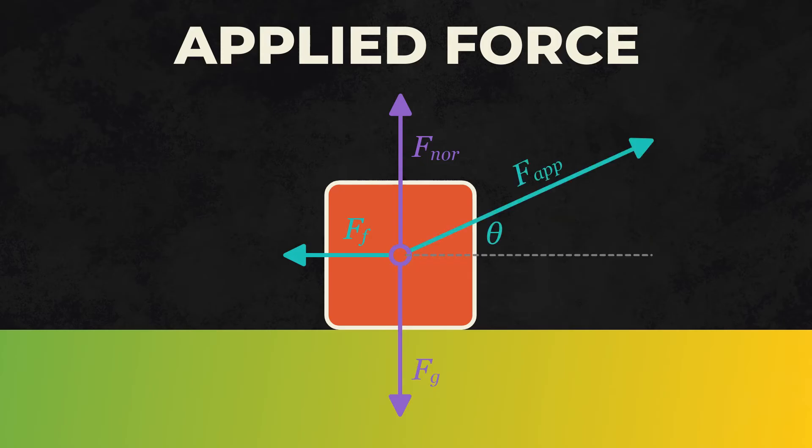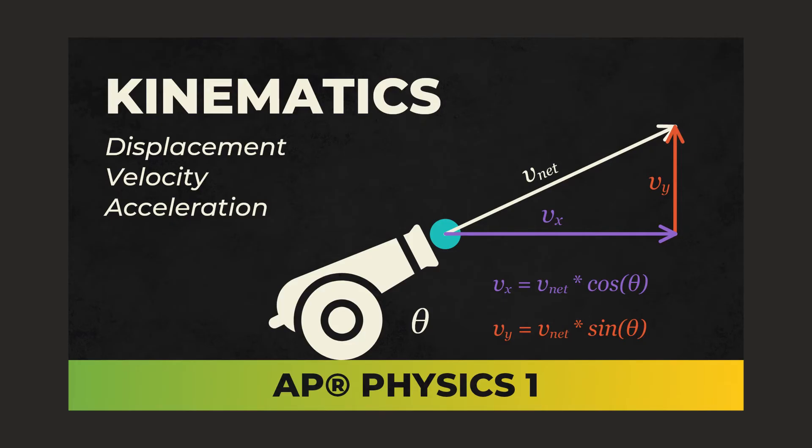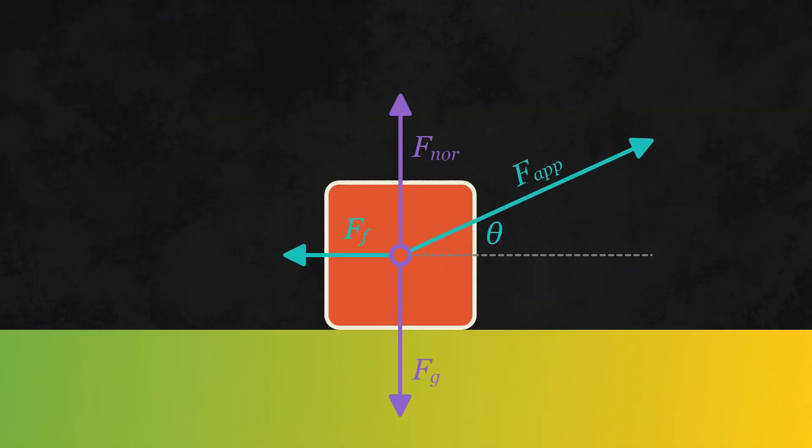If a force is applied at an angle, you'll need to break this force down into its x component and its y component. If you don't know how to do this, watch my previous video on kinematics where I explain how to break down a vector. In any case, at whatever angle the force is being applied at, there'll be some amount of force in the x direction and some amount of force in the y direction.